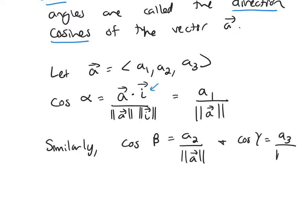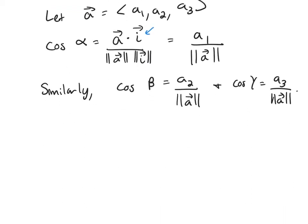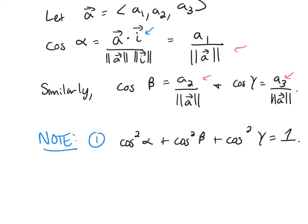So there are a couple things I want to mention here. Note, the first one is that cosine squared alpha plus cosine squared beta plus cosine squared gamma equals 1. You can verify that using these three formulas right here. I'm not going to do that.